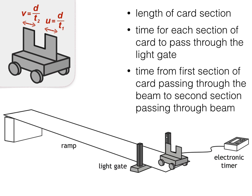Unless the trolley is moving really slowly, this would be almost impossible to measure because of human reaction time. When doing this experiment in class, the light gate wouldn't be plugged into a simple timer. A device which could measure the time taken for each section of card to pass through the light gate and the time between the first and second section passing through it would need to be used.